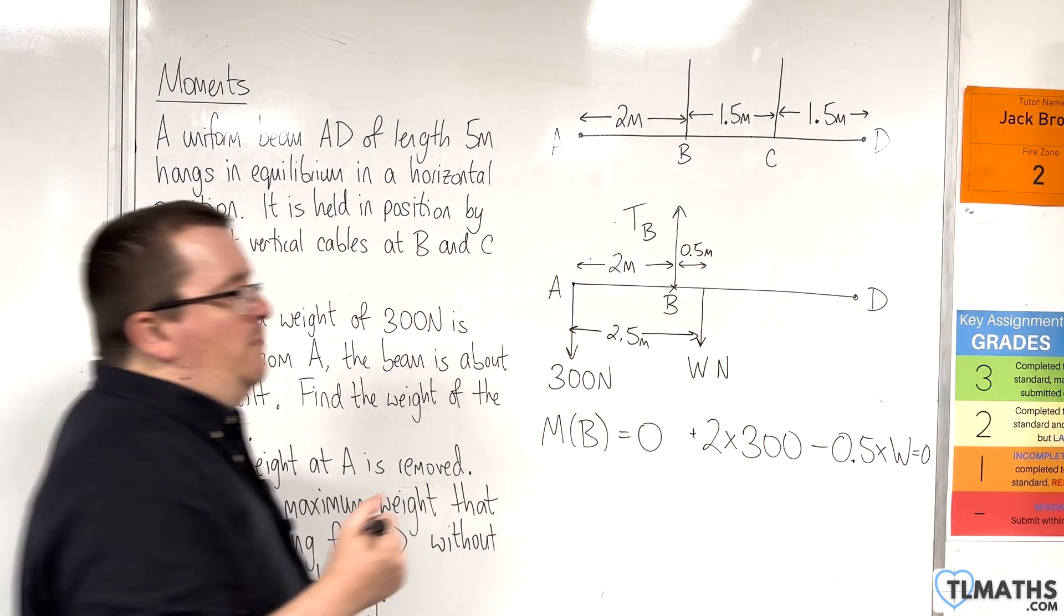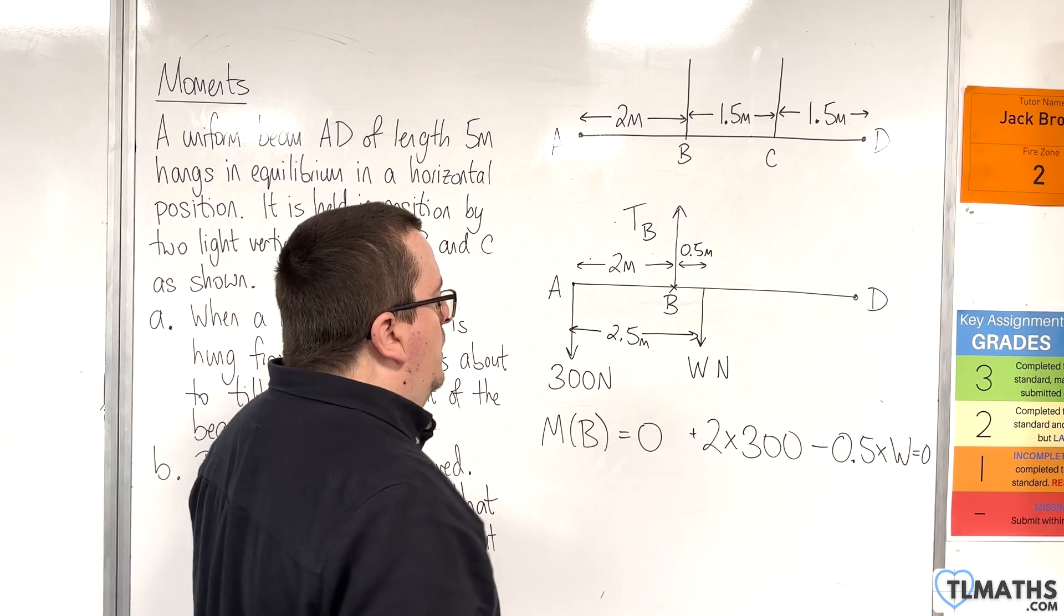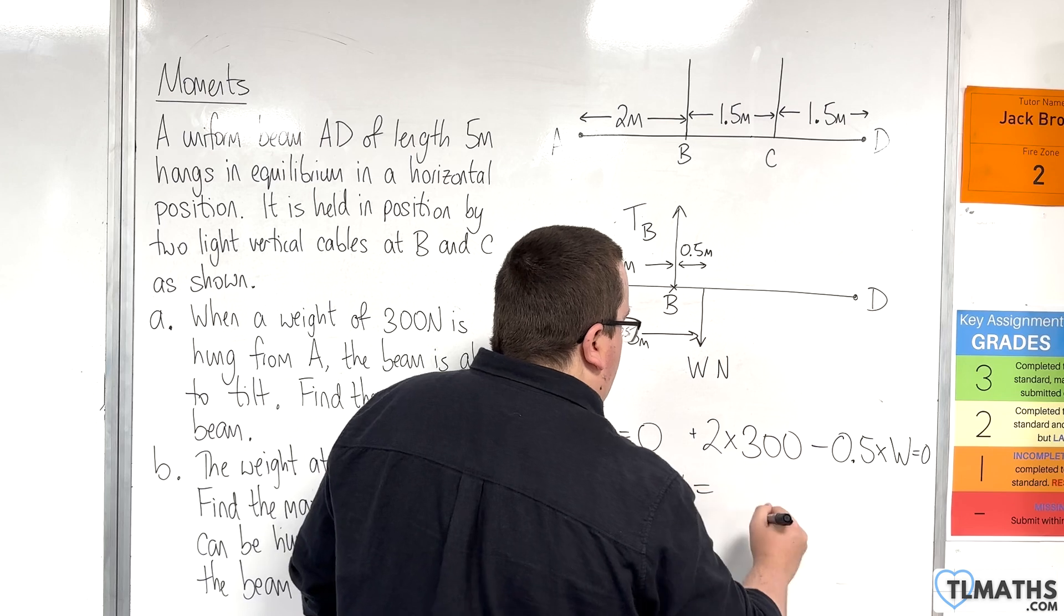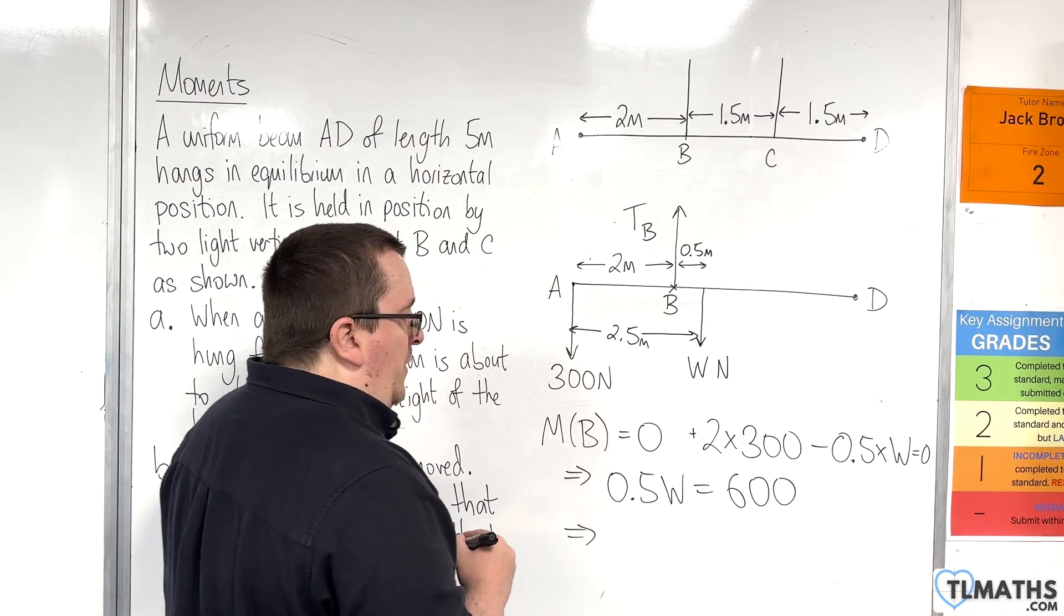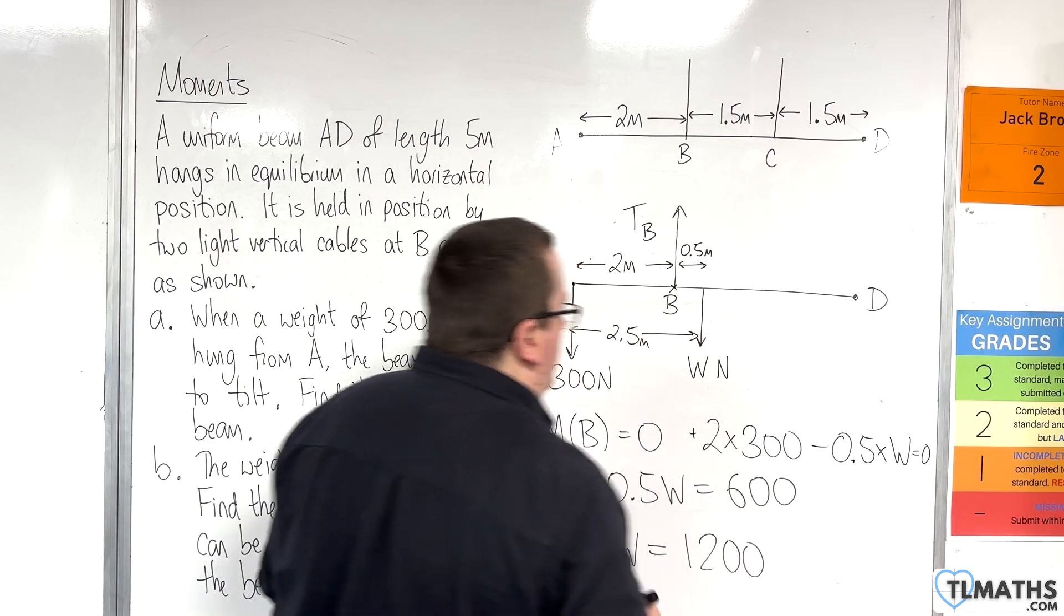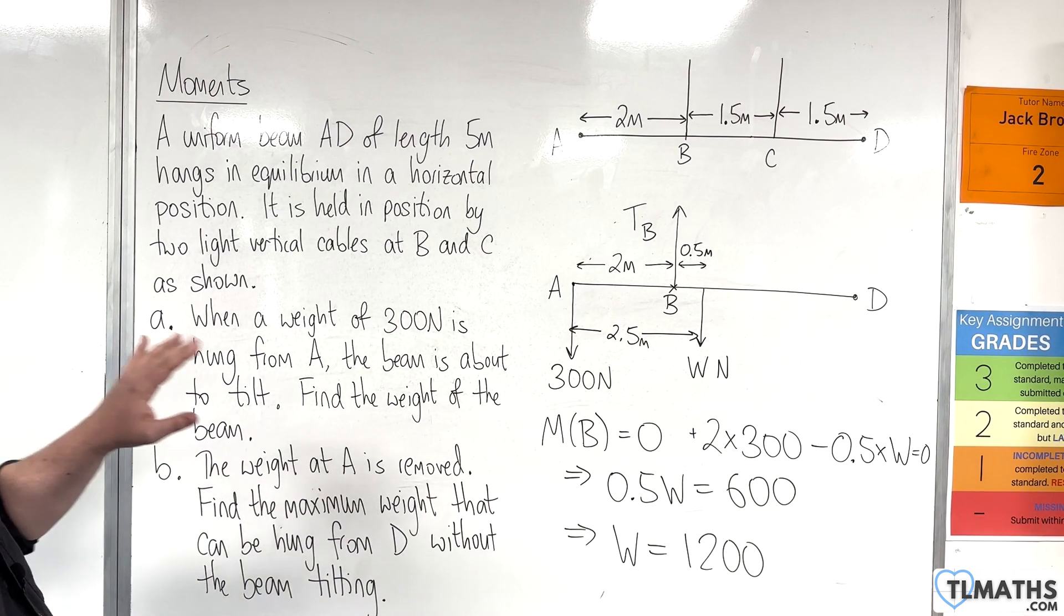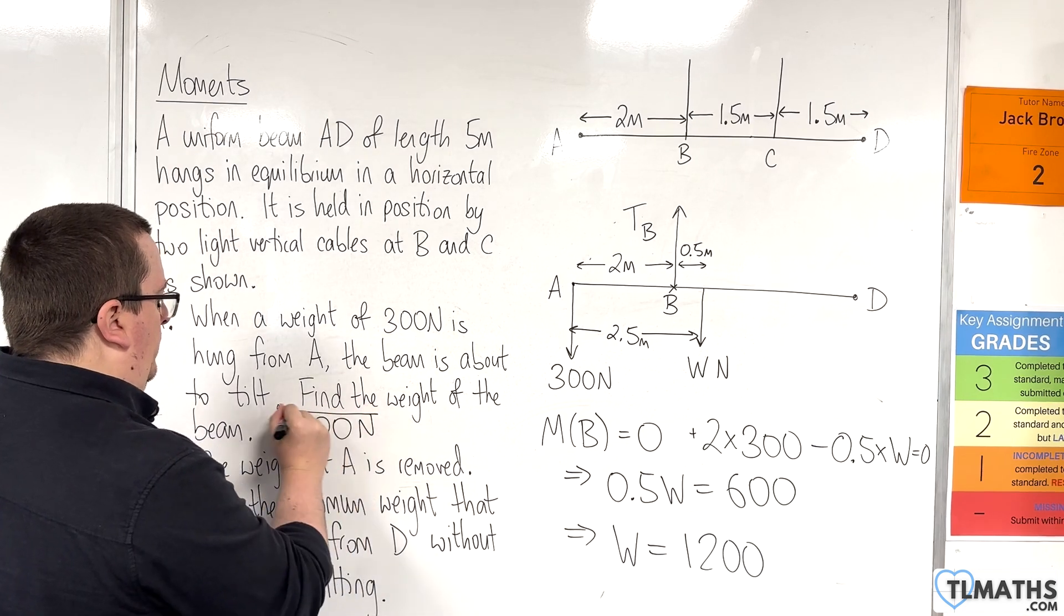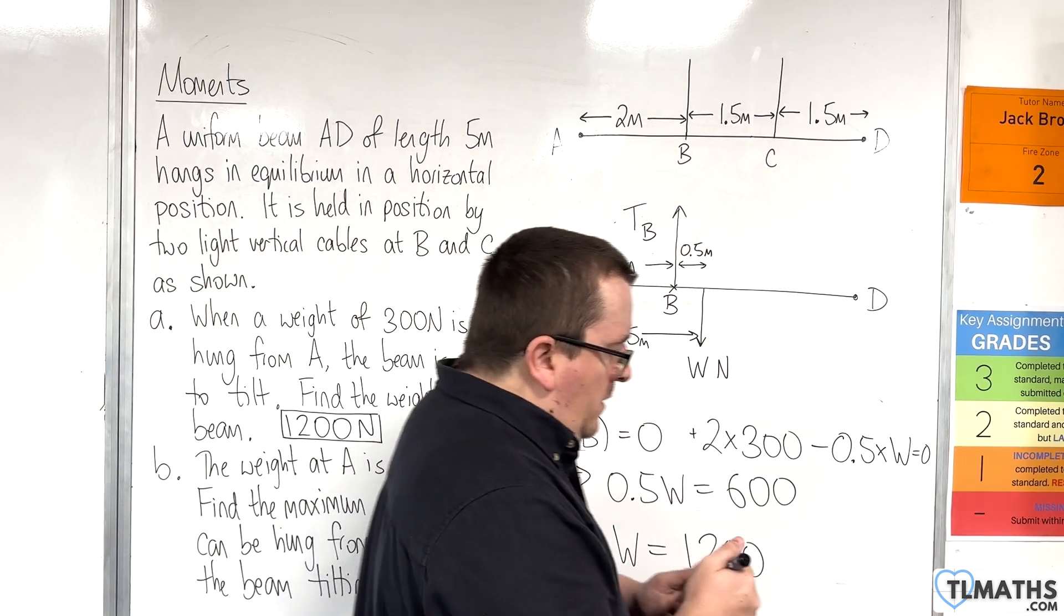And so the sum of those will be zero, because we're still going to be in equilibrium. So this gives me an equation now for W. So we know then that 0.5W is equal to 600. So if we divide both sides by 0.5, then W is going to be equal to 1,200. So we know that the weight of the beam is 1,200 newtons. And that's what we wanted.